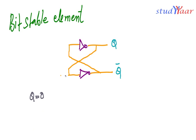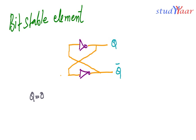Let us assume Q is equal to zero. When Q is zero, this is zero, and when this is zero, this is one. The inverted form of one is zero, so you end up with Q equal to zero again. So if Q is equal to zero, you are going to get zero forever.